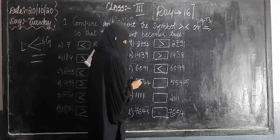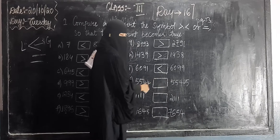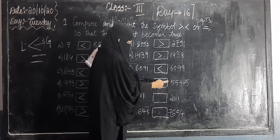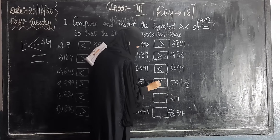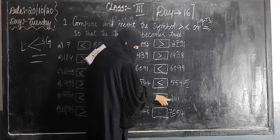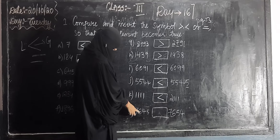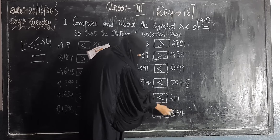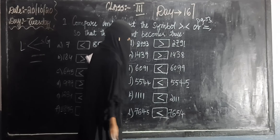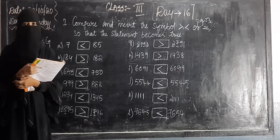Next: 5544 and 5545. Three numbers are similar — last one changes. Five is bigger so insert greater than. Then: 1111 and 2111 — obviously two thousand is bigger, so insert greater than. Next: 7645 and 7654 — 7654 is the biggest number, put the greater than sign. This is your reader work only. Hope you all understand this concept. Stay home, stay safe and laugh, kids.